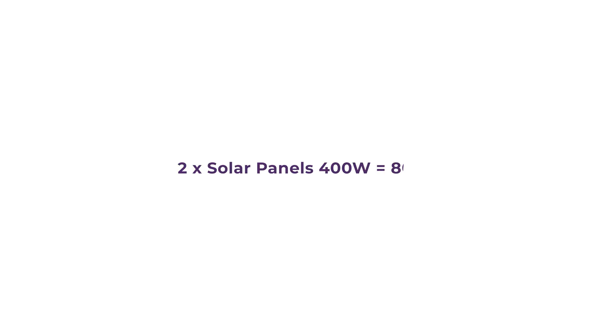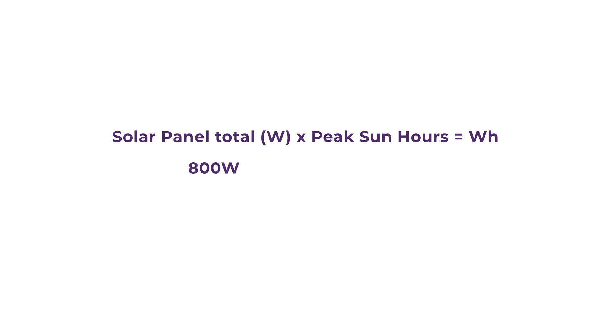So, if we have just two 400 watt solar panels set up on that January day, the calculation will be 800 watts times 5.57 hours, which equals 4,456 watt hours. This can then be used to estimate what you can run, and we've got another video explaining that linked in the description.